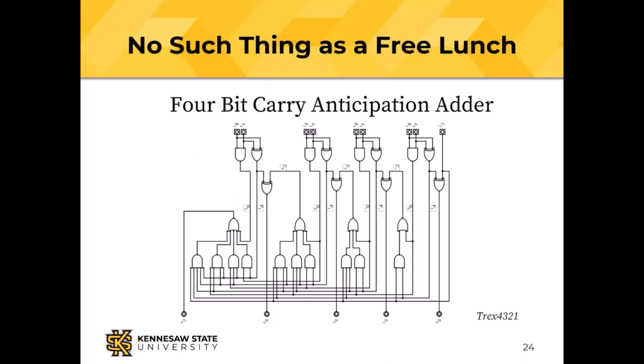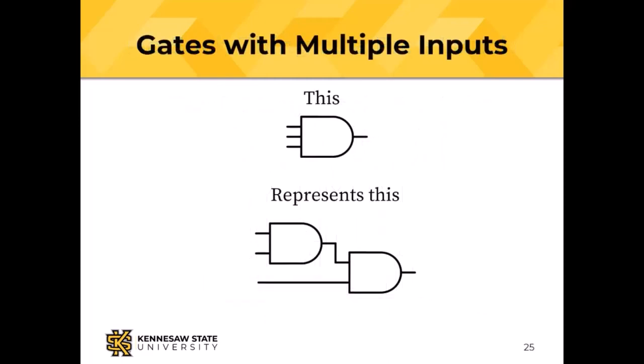The carry anticipation adder uses a four-input OR gate. Building a three-input AND gate from two two-input AND gates is straightforward — in practice you'd take the transistors and wire them together. We don't need to worry about that; it's for the electrical engineers. Similarly, four-input AND gates can be built using OR gates, XOR gates, or any gates we've looked at.